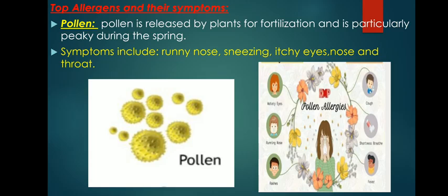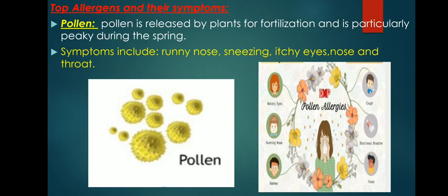What is a pollen allergy? Pollen is one of the most common triggers of seasonal allergy. Many people know pollen allergy as hay fever, but it is usually referred to as seasonal allergic rhinitis. Each spring, summer and fall, plants release tiny pollen grains to fertilize other plants of the same species. Most of the pollen that causes allergic reactions comes from trees, weeds and grasses. These plants make small, light and dry pollen grains that travel by the wind. Grasses are the most common causes of allergy.